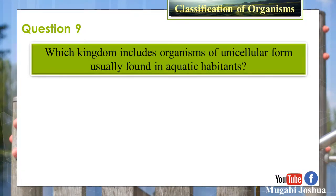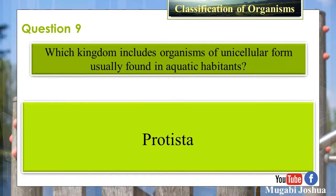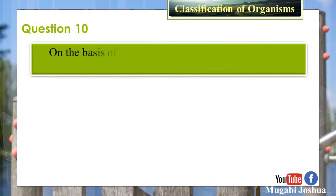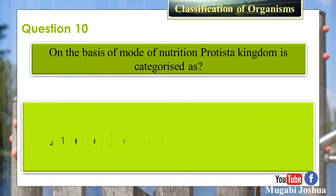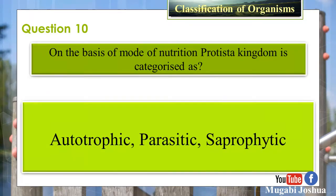Question 9: Which kingdom includes organisms of unicellular form usually found in aquatic habitats? Answer: Protista. Question 10: On the basis of mode of nutrition, Protista kingdom is categorized as autotrophic, parasitic, and saprophytic.